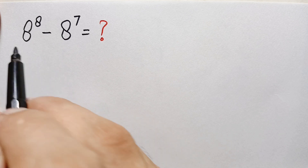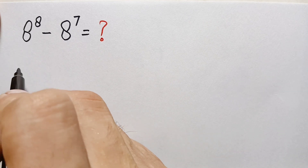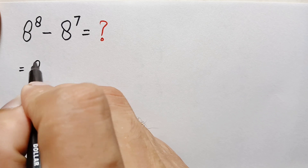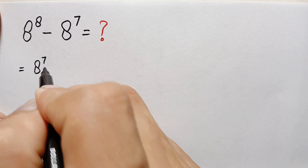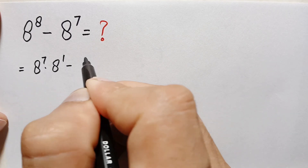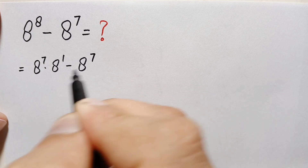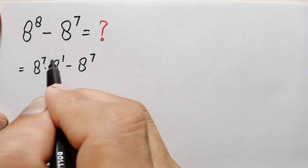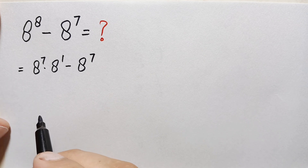In the first method, we can write the first number: 8 raised to power 8 can be written as 8 raised to power 7 times 8 raised to power 1, minus 8 raised to power 8. If you combine these two numbers, the base is the same so we add the powers, giving us 8 raised to power 8.